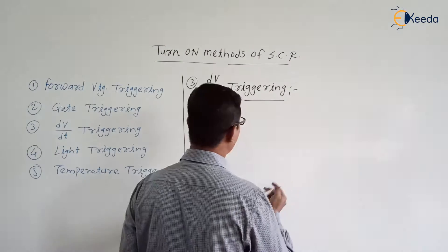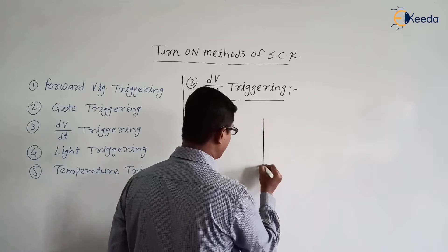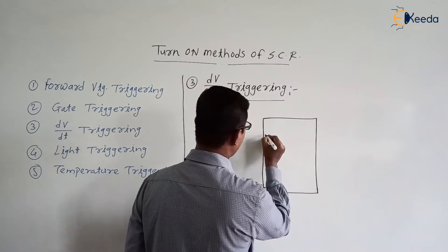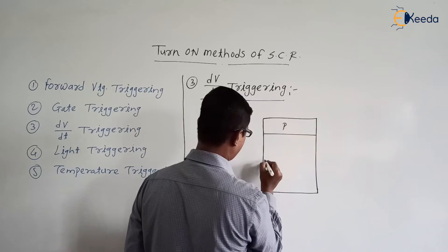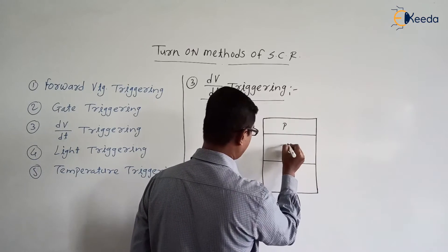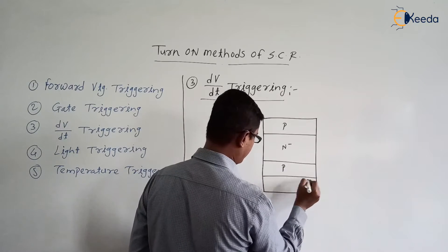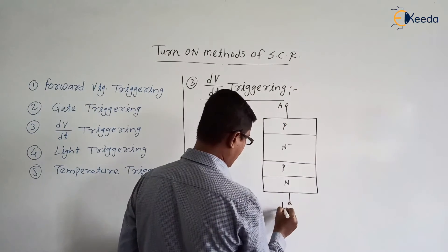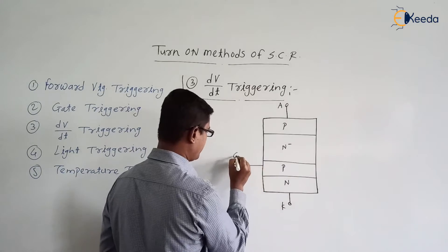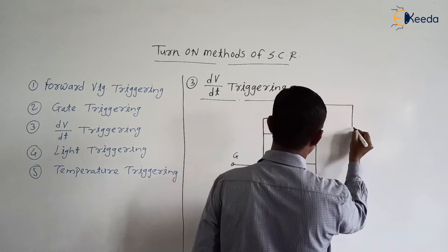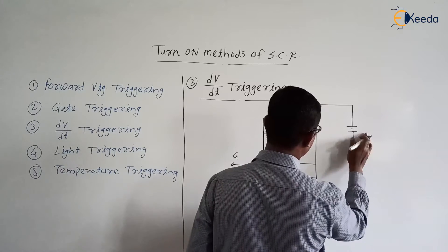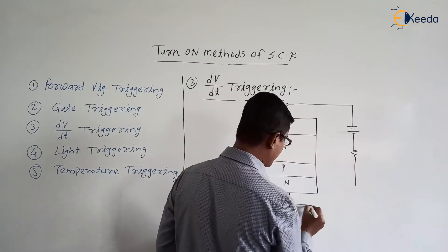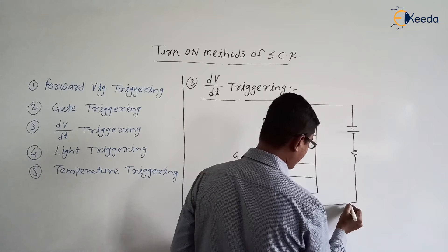First of all, recall the basic structure of the SCR. SCR is a PNPN device; it consists of four layers and three junctions. Here it is anode, cathode and the gate. The supply voltage Vs — the positive plate of Vs is connected to the anode of the SCR, and the negative plate is connected to the cathode of the SCR.